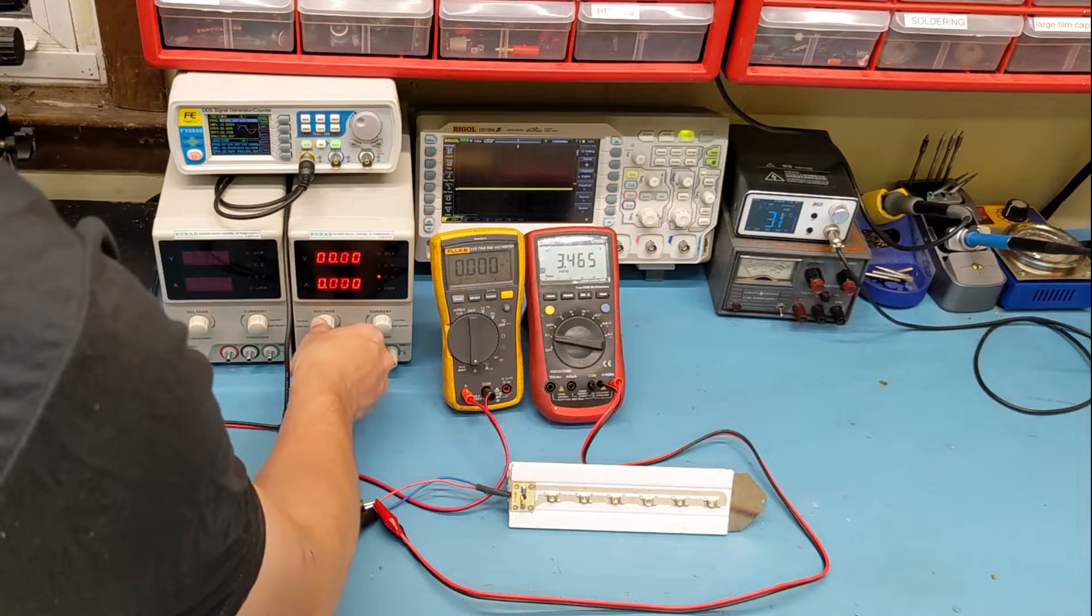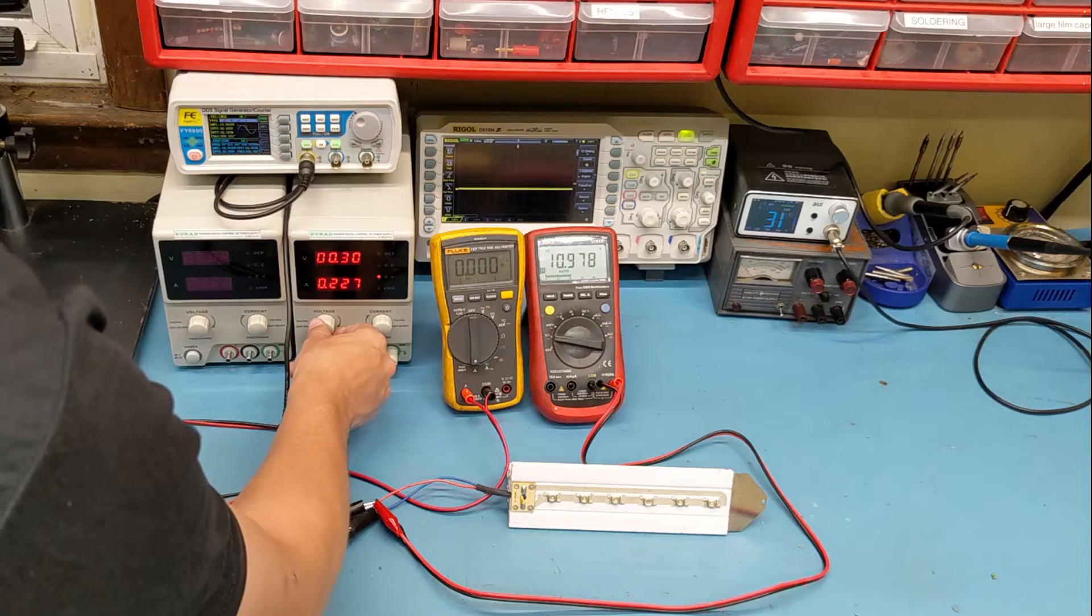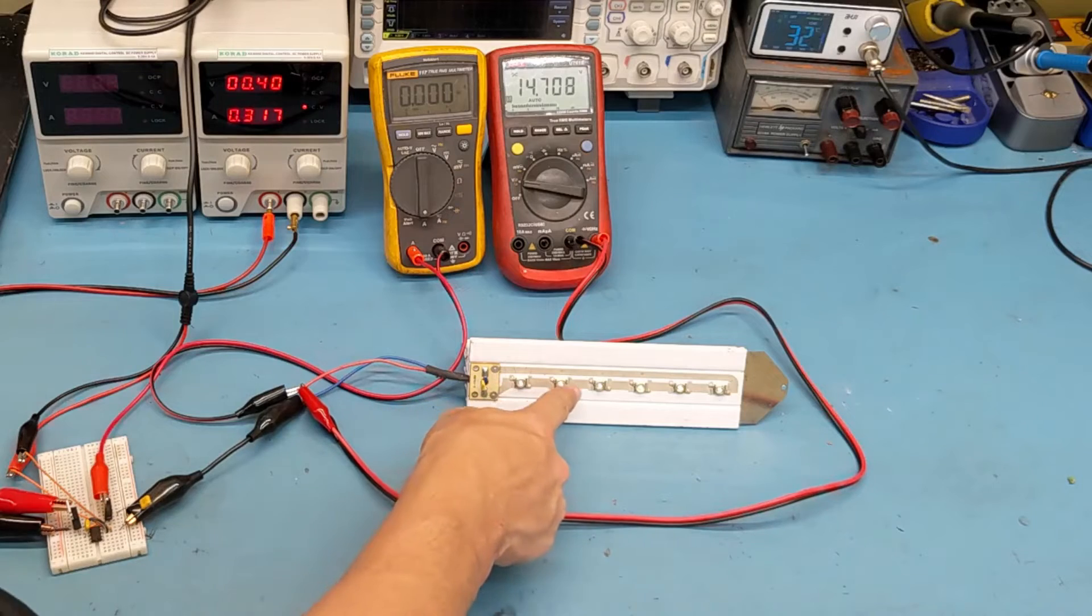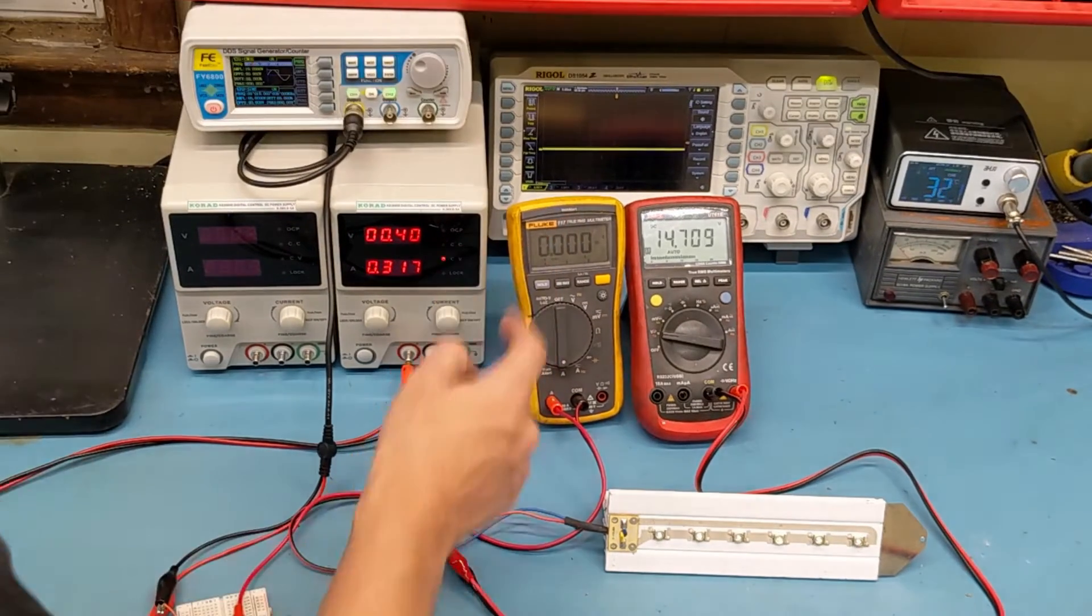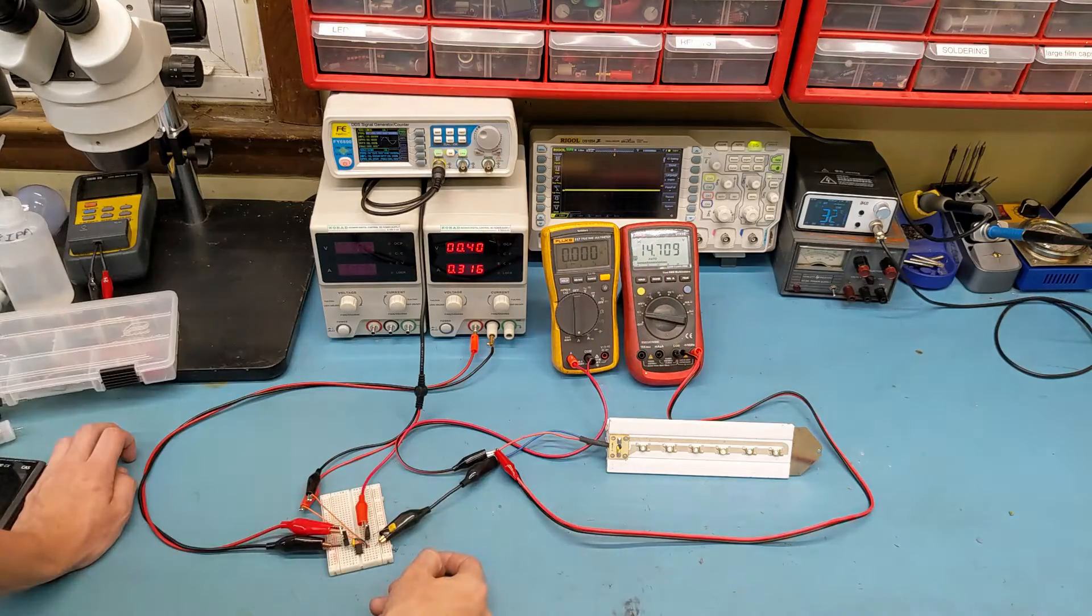We will slowly wind the voltage here up. 30 millivolts. 40 millivolts. Hey, there we go. So now you can see these LEDs are just barely starting to turn on. The current we are pulling is not even registering on the meter. And we are pushing about 14 volts across these LEDs.